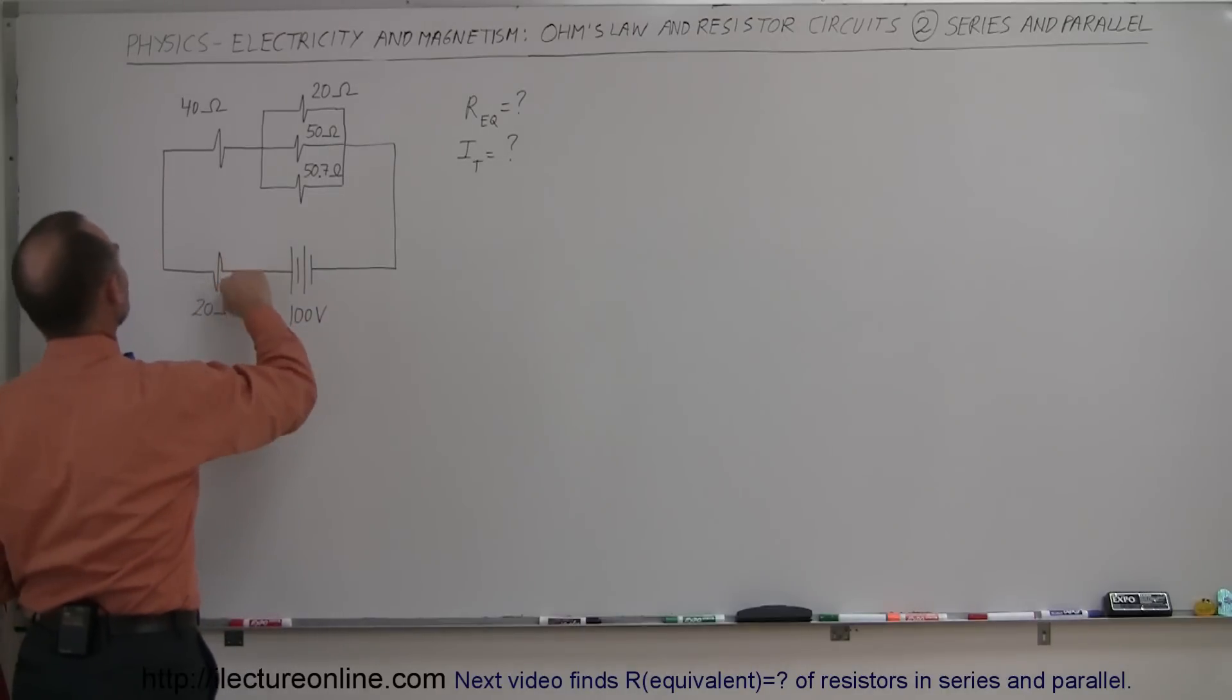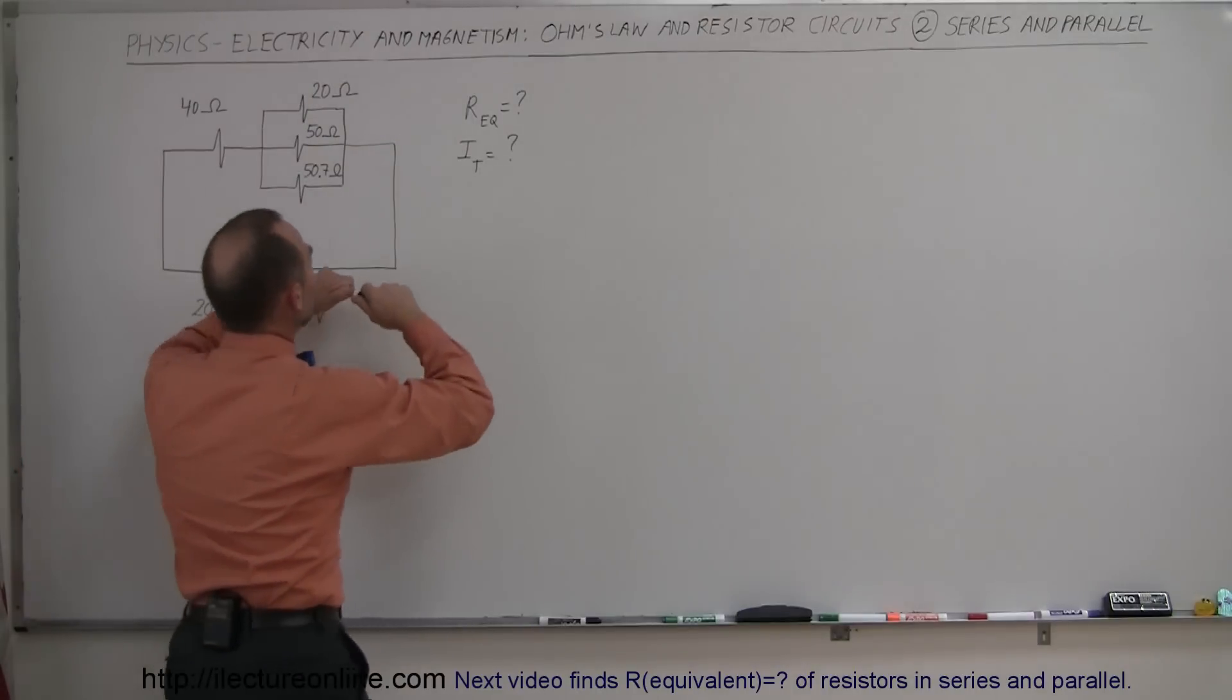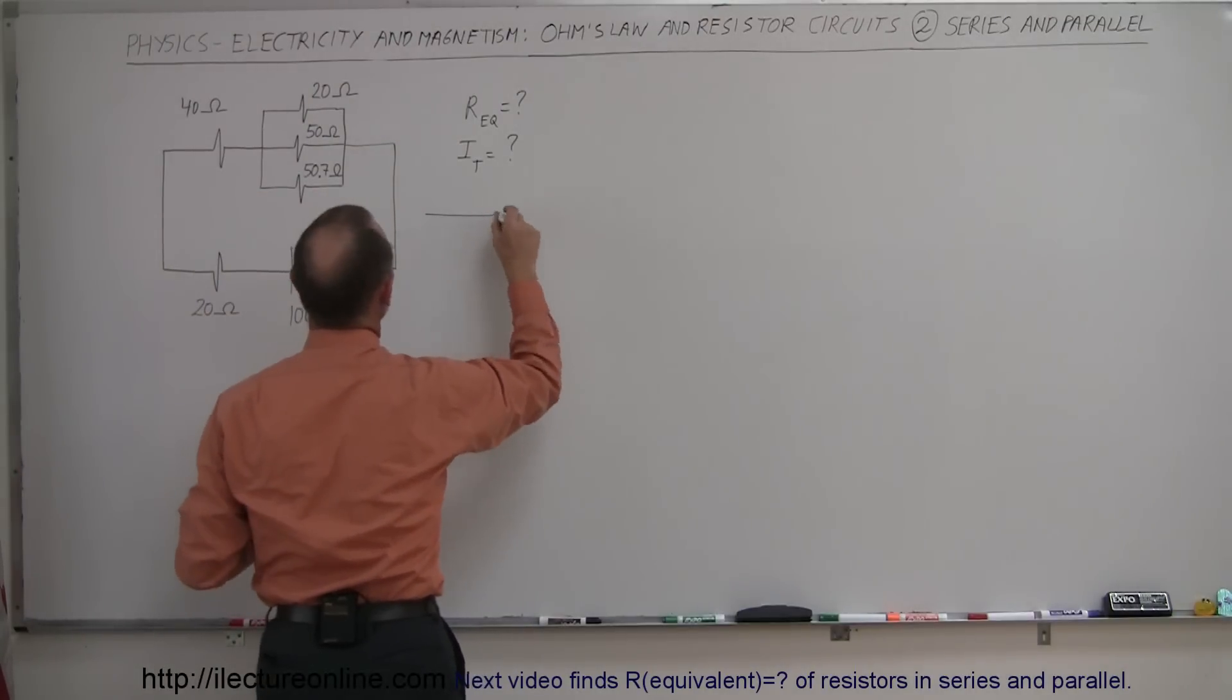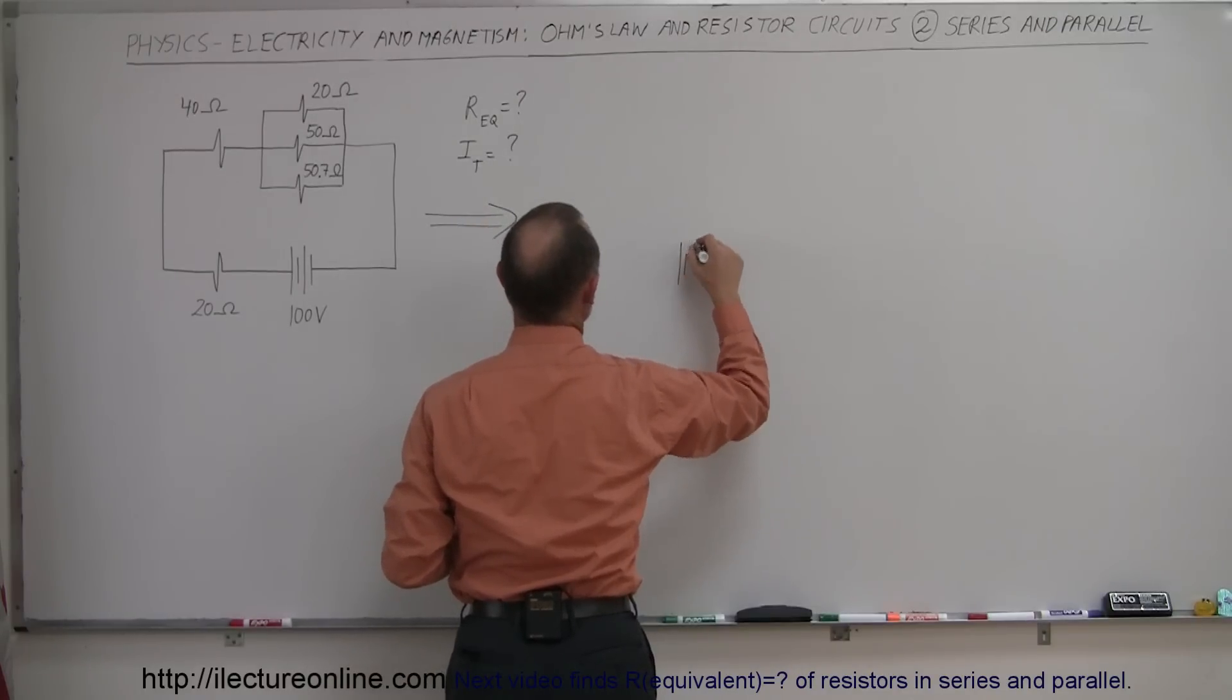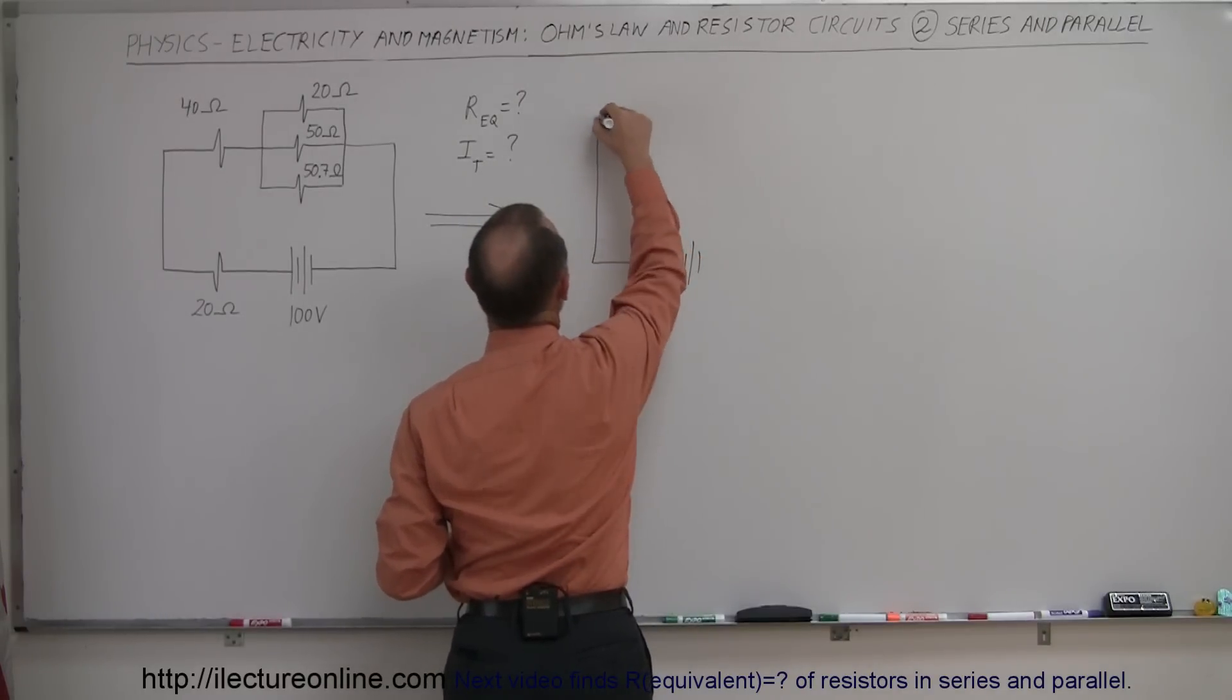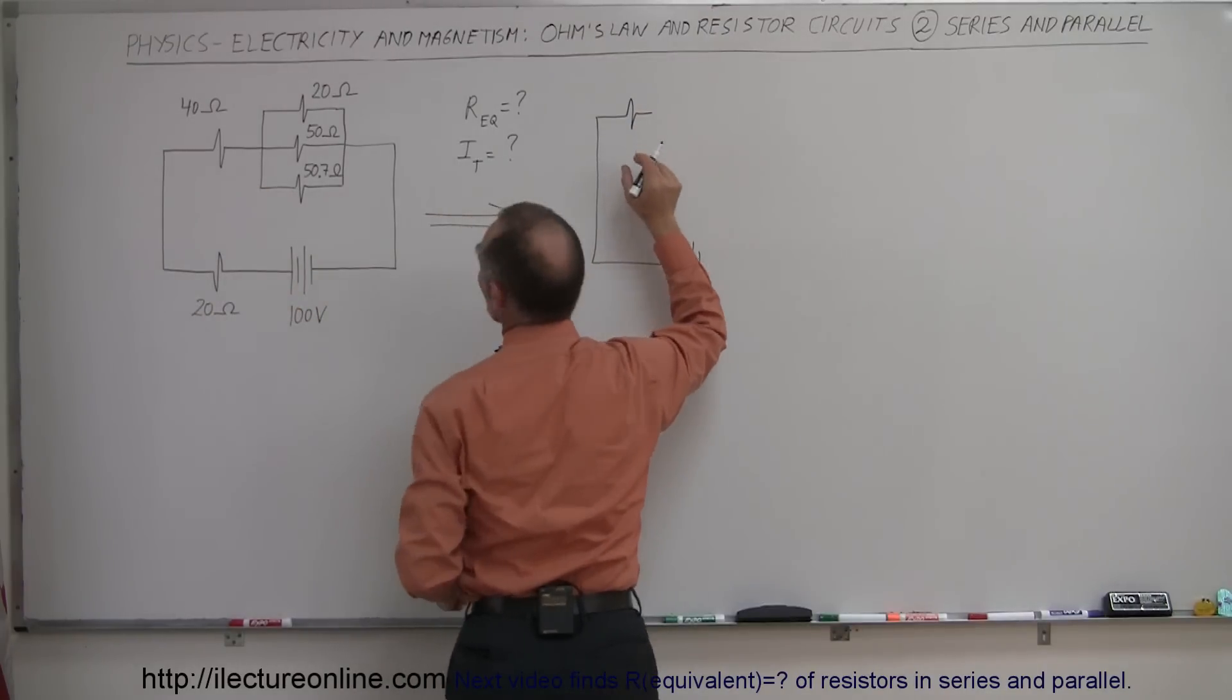So what we're going to do is we're going to combine these two together because they're in series. We're going to combine those three together because they're in parallel. And now we'll get an equivalent circuit, an intermediate stage, where we have a single—so here's our battery—we'll have a single resistor right here representing the equivalent of these two combined.